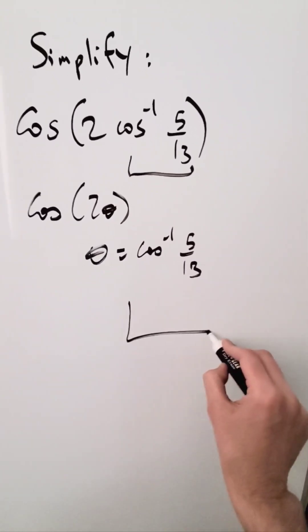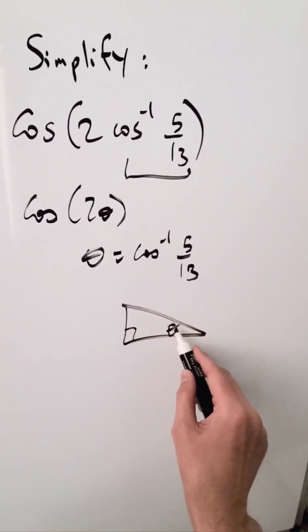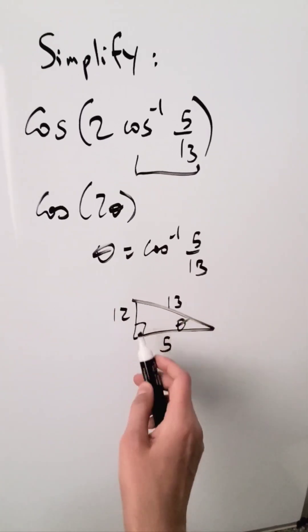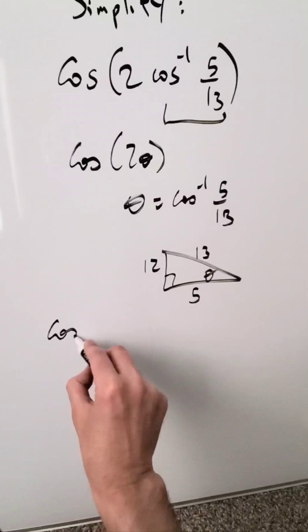From this expression right here you can generate a right triangle, a certain angle theta by means of the definition of cosine which is adjacent over hypotenuse, and you know this side to be 12. When you are looking at cosine of 2 theta, a certain trigonometric identity comes into play.